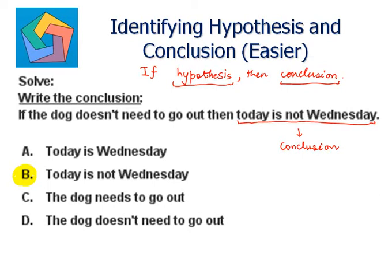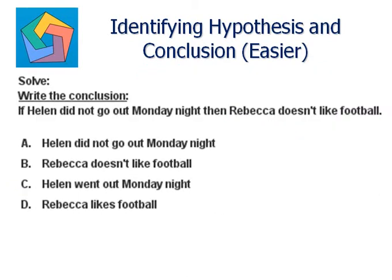Next problem. Solve. Write the conclusion. If Helen did not go out Monday night, then Rebecca doesn't like football. The statement followed by 'then' is 'Rebecca does not like football,' so this is the conclusion. We can say B — Rebecca doesn't like football is the answer.